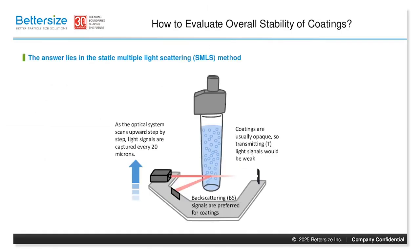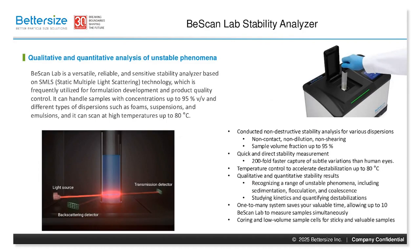To analyze the stability of coatings and other suspension systems, Static Multiple Light Scattering, or SMLS, is a powerful, non-destructive, simple, and fast technique. The B-Scan Lab Stability Analyzer, based on SMLS technology, provides quick and direct stability measurements for coating systems.